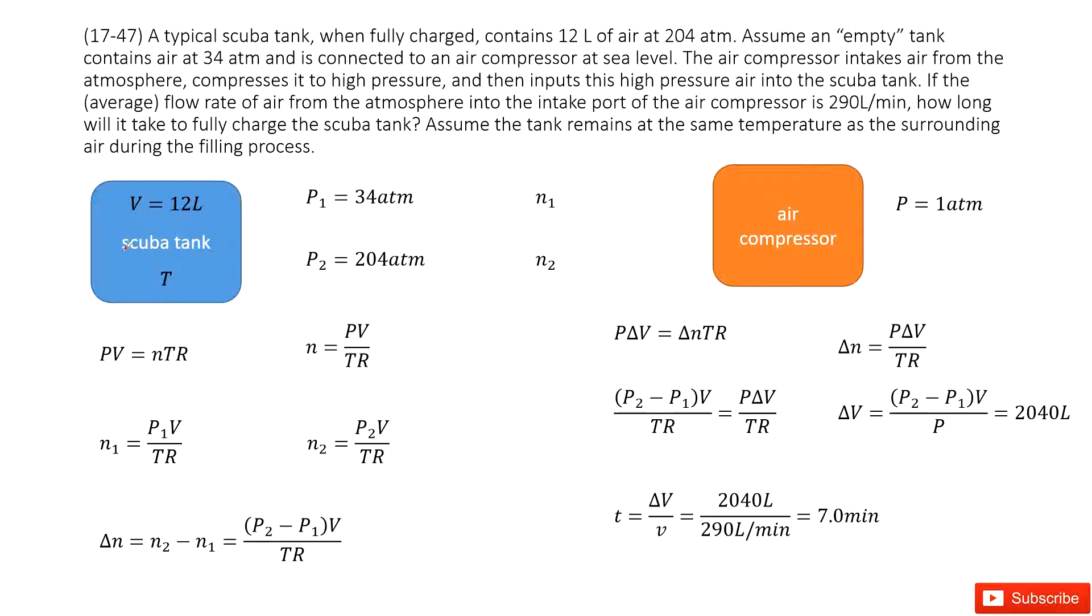Now you can see we have a tank. In this case, it is empty, but it still contains air. The pressure is 34 atm, so P1 is 34 atm. And then we need to input some air inside this tank to make the pressure become 24 atm. Full connected, full charged. So we need to input some air inside to make P2 reach 24 atm.